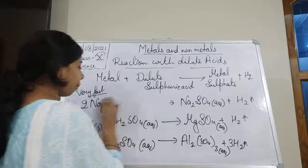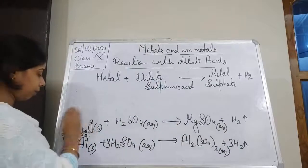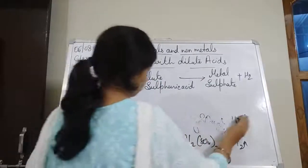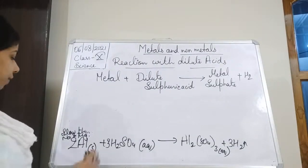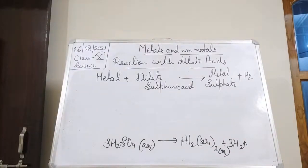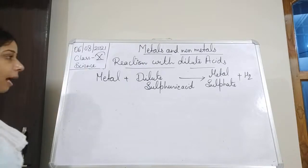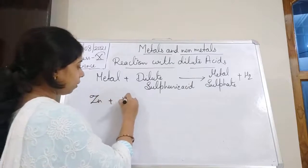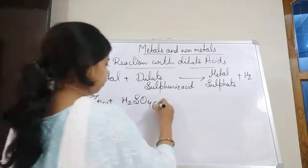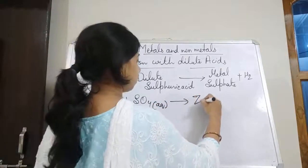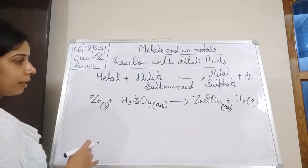Zinc does not react vigorously or very fast like the other metals. Zinc reacts with H₂SO₄ (sulfuric acid) to form zinc sulfate, ZnSO₄, and H₂ gas is released. The equation is already balanced. Zinc is less reactive than aluminium.